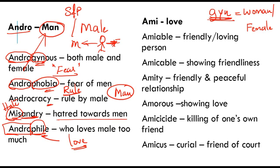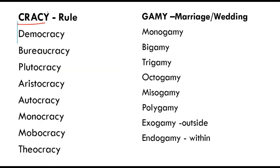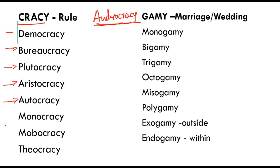We already learned 'androcracy' — 'andro' means man, 'cracy' means rule, so rule by men. Under the umbrella of 'cracy' we have: democracy, bureaucracy, plutocracy, aristocracy, autocracy, monocracy, mobocracy, and theocracy. This will open even more windows for additional root words. 'Democracy' is made up of 'dem' meaning people and 'cracy' meaning rule — so rule by the people.